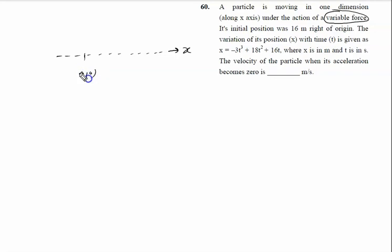This is the origin having coordinate zero. This is the initial position on the right, so it is (16,0). This is the initial position of the particle. The variation of its position with time t is given by this relation.